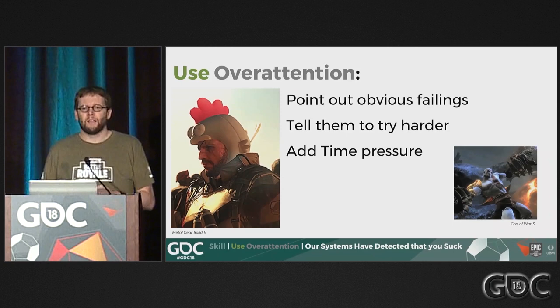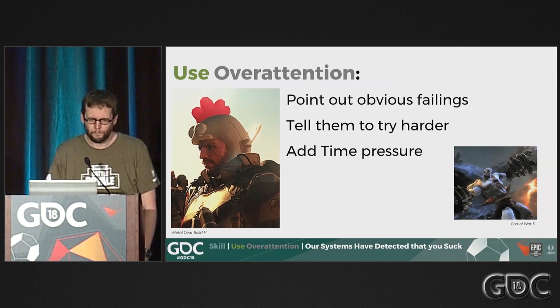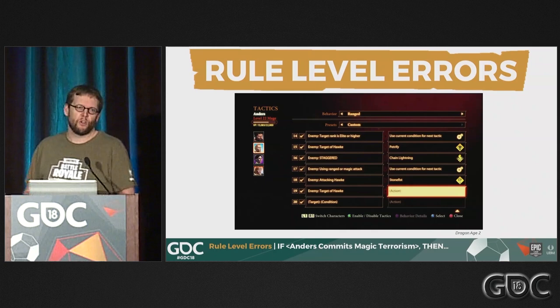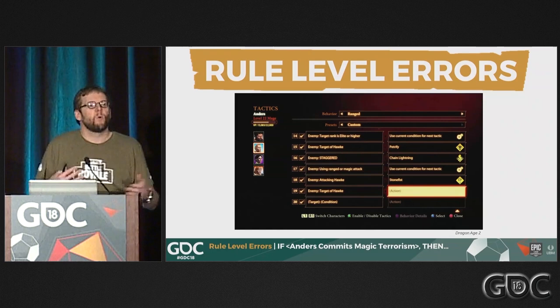Moving on to rule level errors. Here's an example from Dragon Age where you could set up squad tactics to say 'if an enemy is elite, then this squad member does this.' That's how to think about rule level operation — if-then rules.